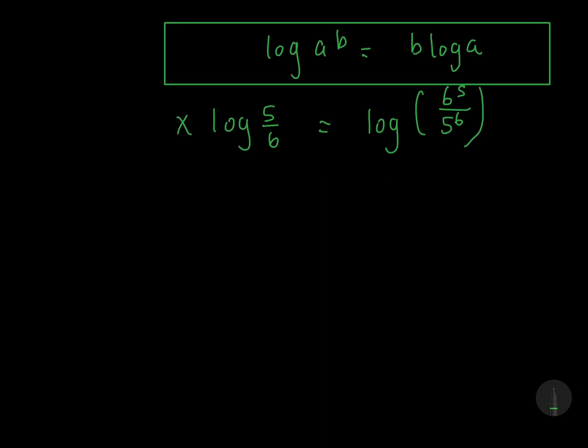From here, in order to find x, we have to divide both sides by log 5 over 6.